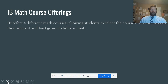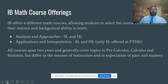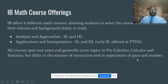IB currently offers four different math classes: analysis and approaches at both the standard level and the higher level, and applications and interpretation at both the SL and HL level as well. However, here at FDHS we only offer the AA SL. All courses span two years and generally cover similar content — precalculus topics, calculus topics, and statistics topics — but they differ in manner of instruction. Analysis and approaches will be more pure math, while applications and interpretation will focus more on applying math to different fields. The higher level will be expected to work at a faster pace and will require more mastery of the topics.